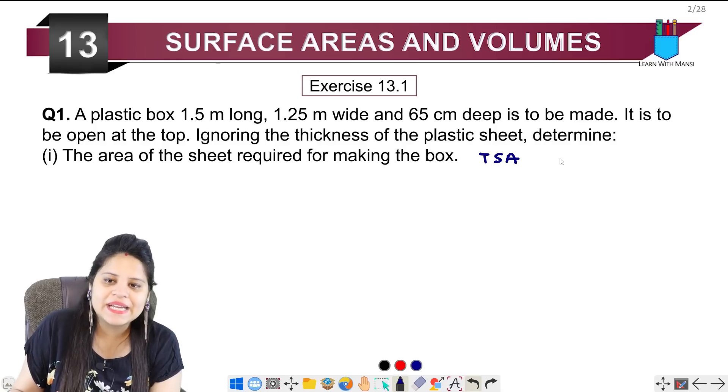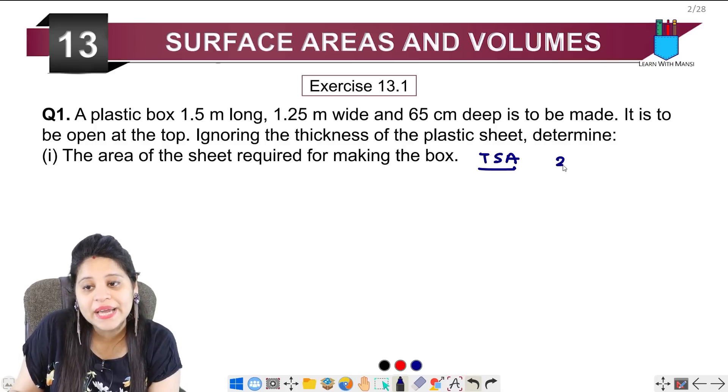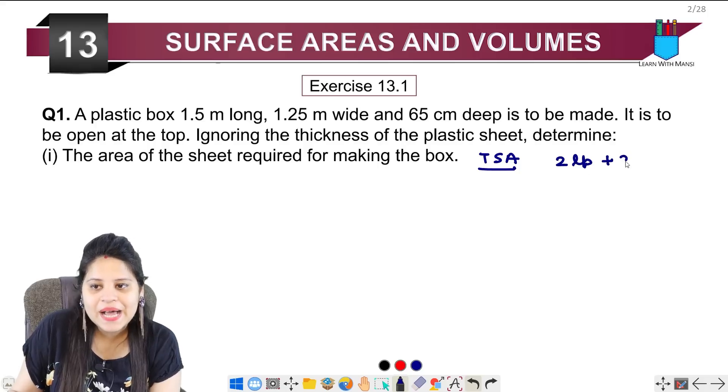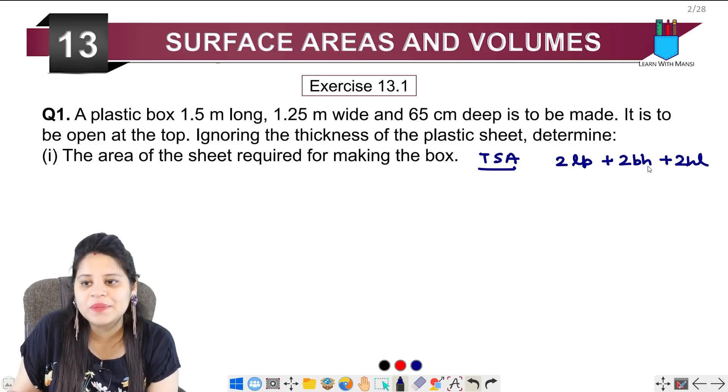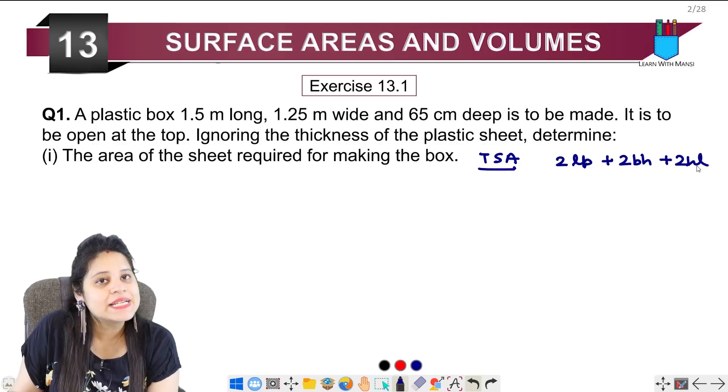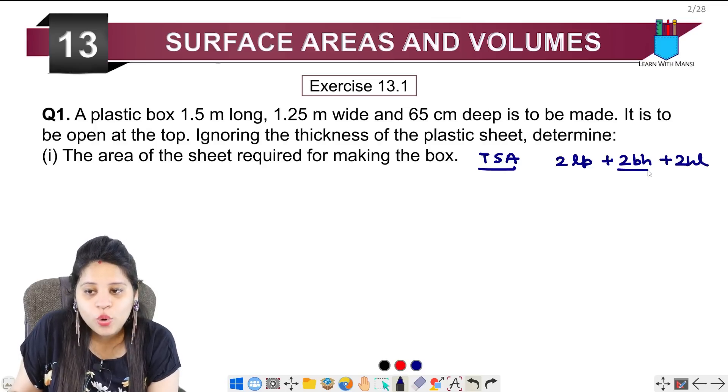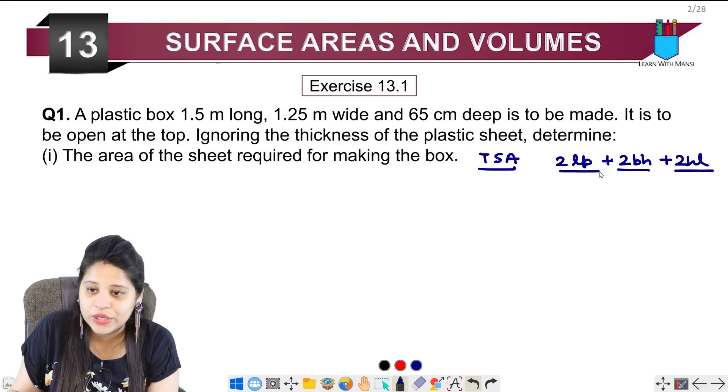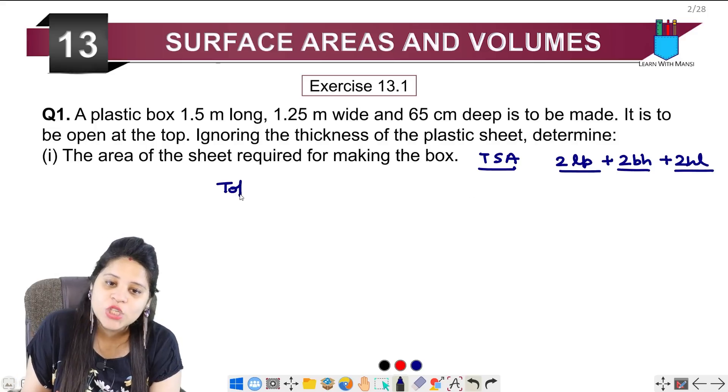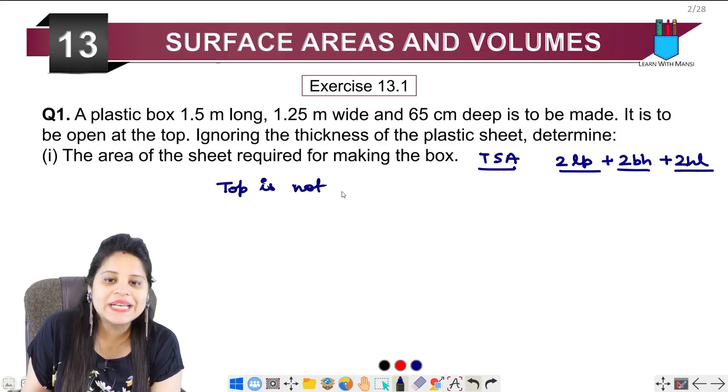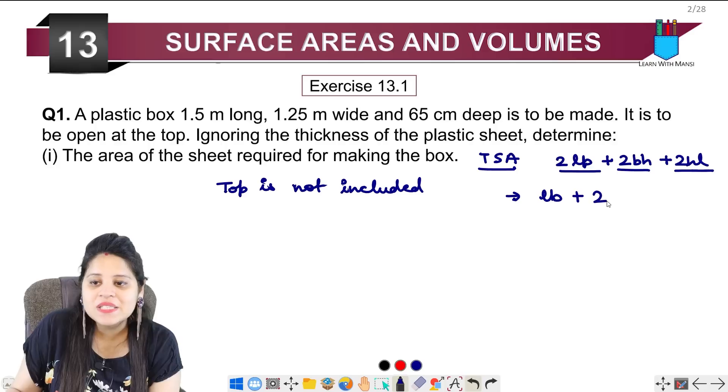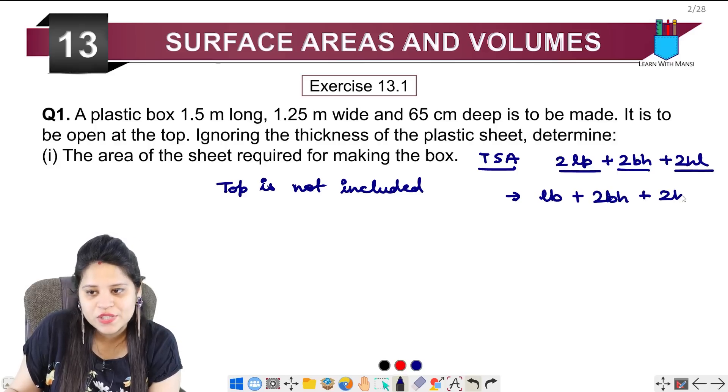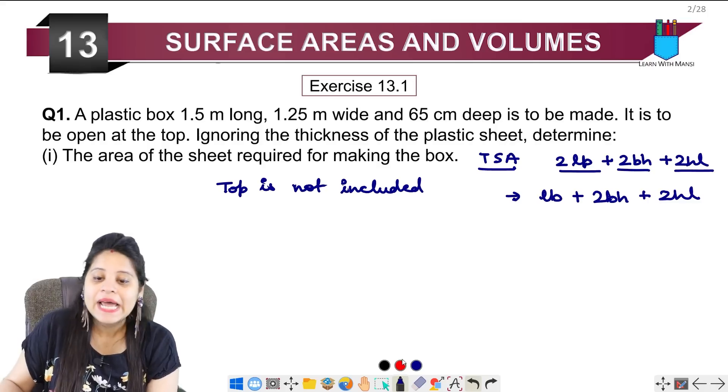If we talk about the total surface area, the total surface area is 2LB plus 2BH plus 2HL. LB means length into breadth, BH is breadth into height and HL is height into length. Now, we have seen that the top is not included. If we don't include the top, then we will reduce length into breadth. So our formula will be length into breadth plus 2 of breadth into height plus 2 of height into length.